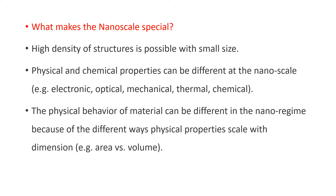Then what makes the nanoscale special? High density of structures is possible with small size. Moreover, physical and chemical properties can be different at the nanoscale. For example, electronic properties, optical properties, mechanical properties, thermal properties, and chemical properties are entirely different from bulk material. The physical behavior of material can be different in the nano regime because of the different ways physical properties scale with dimension — for example, area versus volume.